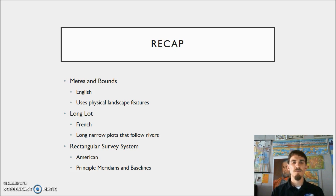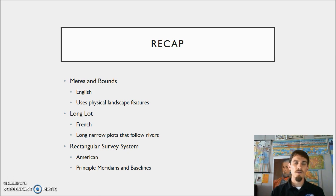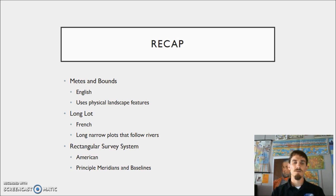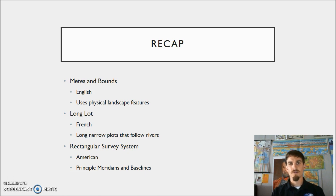In recap, we have three different types of survey systems found in the United States — there are others, but these are the three used in this course. Each was created by different people and helps us understand land use patterns, culture, and the idea of sequent occupancy. The metes and bounds system was created by the English using physical landscape features to create corner points and drawing lines between them. The long lot system was developed by the French — long, narrow lots typically along rivers. The rectangular survey system was developed by Americans using principal meridians and baselines to create townships, ranges, and sections to help inhabit largely uninhabited space.